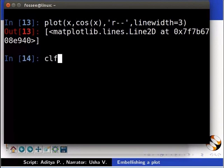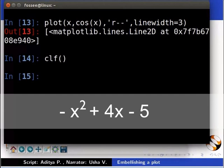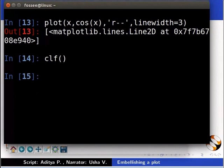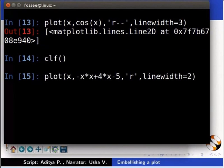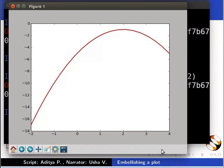Let us start with a plot for the function minus x square plus 4x minus 5. Now type plot inside the brackets x comma minus x multiplied by x plus 4 multiplied by x minus 5 comma inside inverted commas r comma linewidth is equal to 2. We will see the curve of this equation in the plot window.